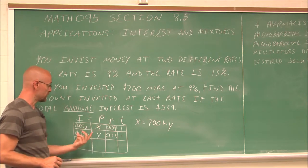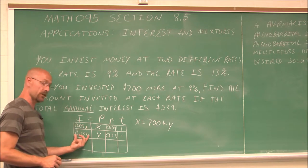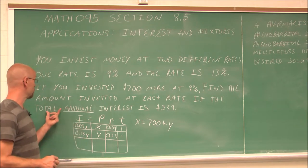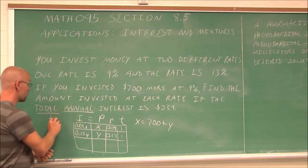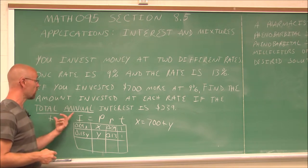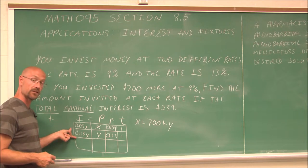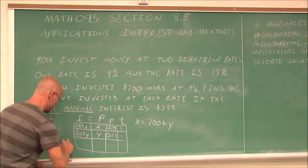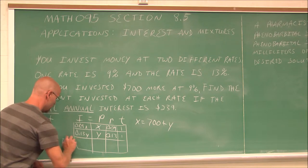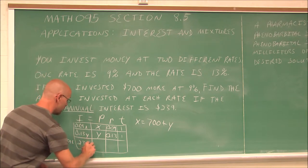Now, we have our two interests, the interest at one account, the interest in the other account. And we're told the total, total is a key word, that tells us we're going to add something together. While the total interest, this interest and this interest together, are going to be $239. So I'm going to write the total in this column right here, $239.